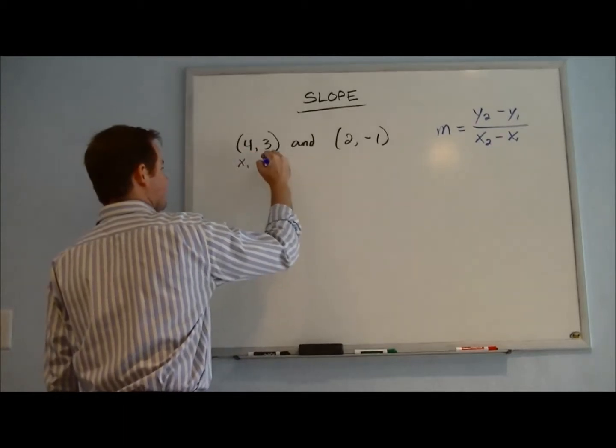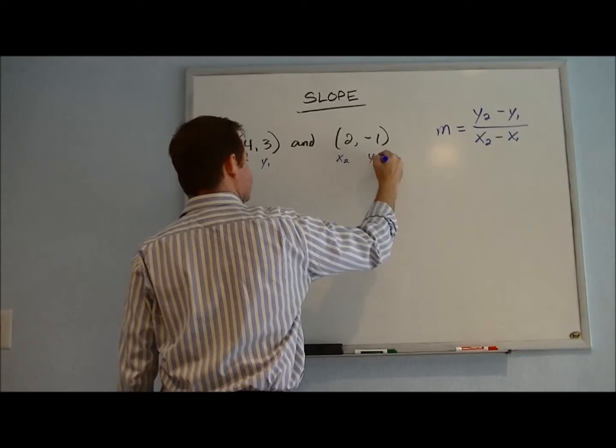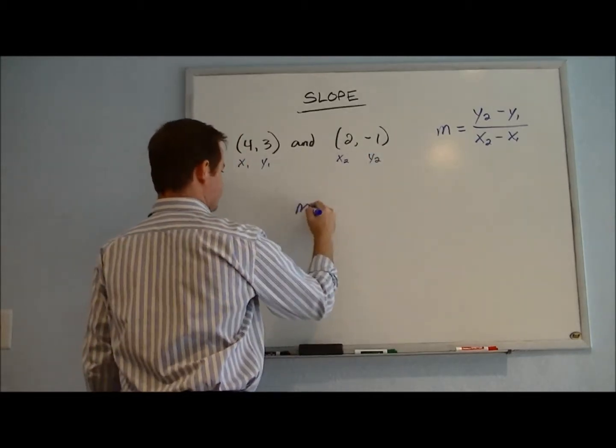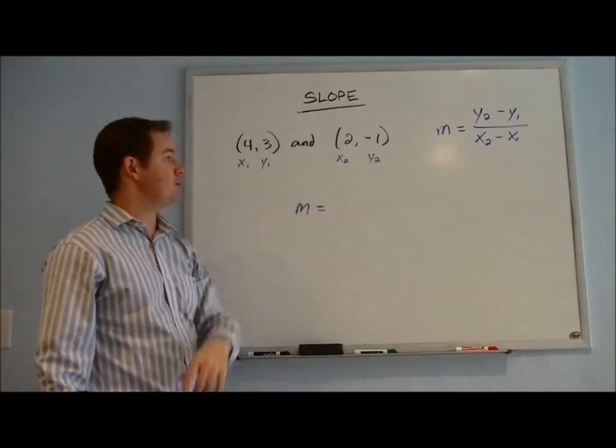So here, we call this x1, and this y1, and this x2, and this y2. Then to solve for slope between these two points, we simply plug it in to this formula.